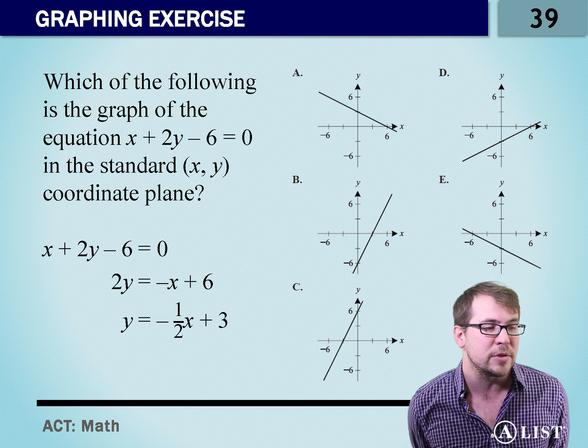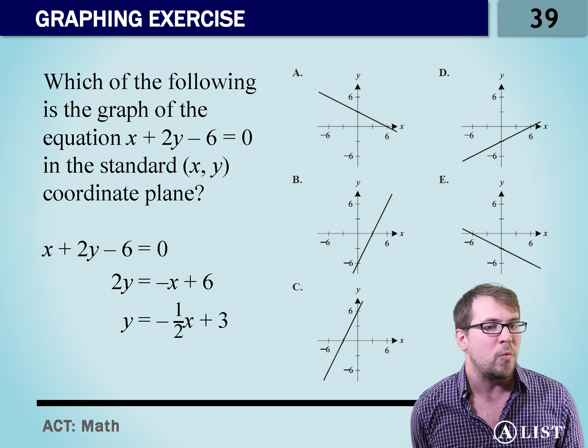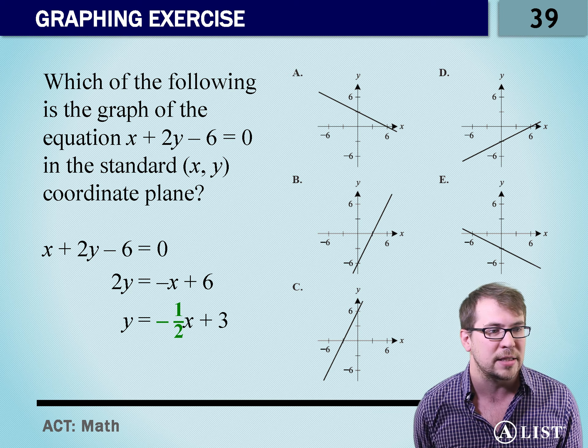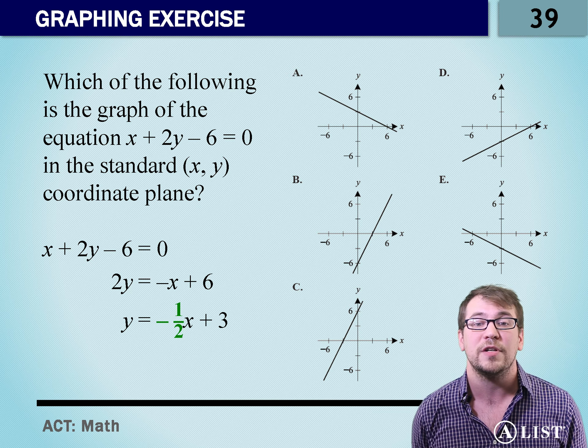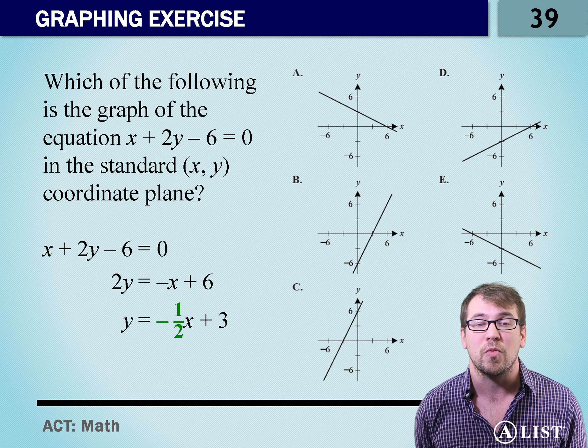Wait, I'm sorry. What was that? y equals mx plus b where m is the slope and y equals negative one-half x. A negative slope. That means it's going to run left to right. It's going to run down.